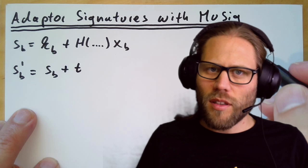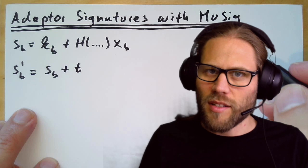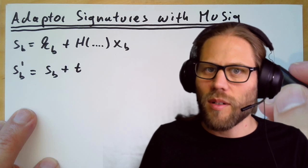I already want to mention that the value t, which we are adding here, is the secret that we are trying to hide inside the adapter signature when using multi-signatures.